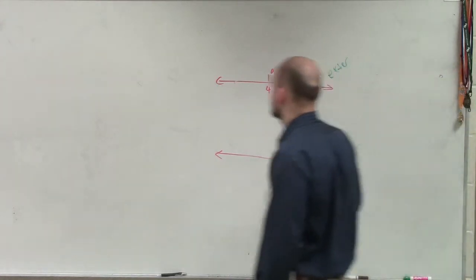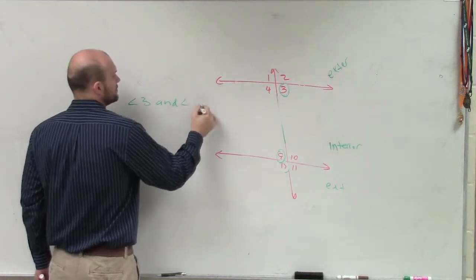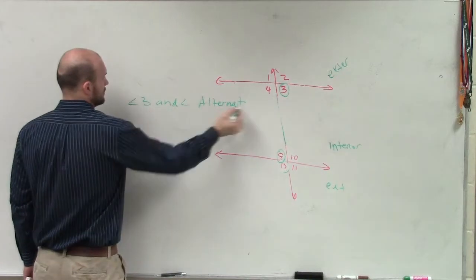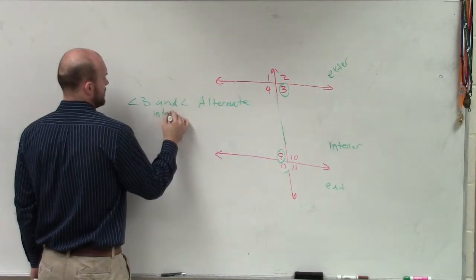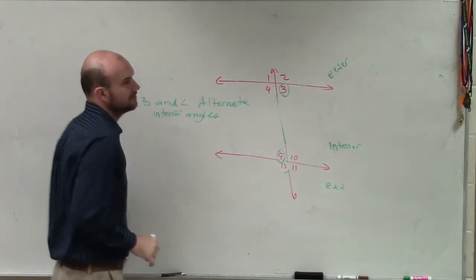Alternating. Alternating. Angle 3 and angle 9 are alternate interior angles. Okay?